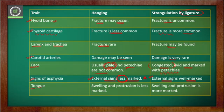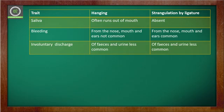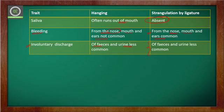Regarding the tongue: in hanging it is swelled but protrusion is less marked, whereas in strangulation the protrusion is marked and swelling is present. For saliva: in hanging it runs out of the mouth, but in ligature strangulation it is completely absent. Bleeding from the nose, mouth, and ears is not common in hanging, but is very common in ligature strangulation. Finally, involuntary discharge of feces, urine, etc. is less common in hanging, but is seen in ligature strangulation.